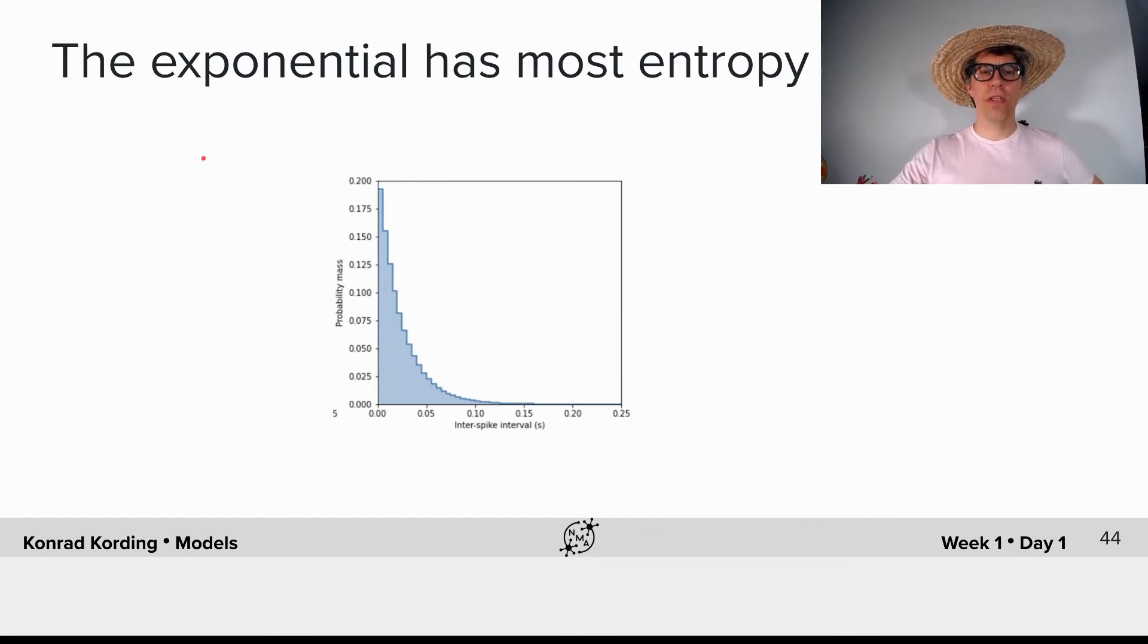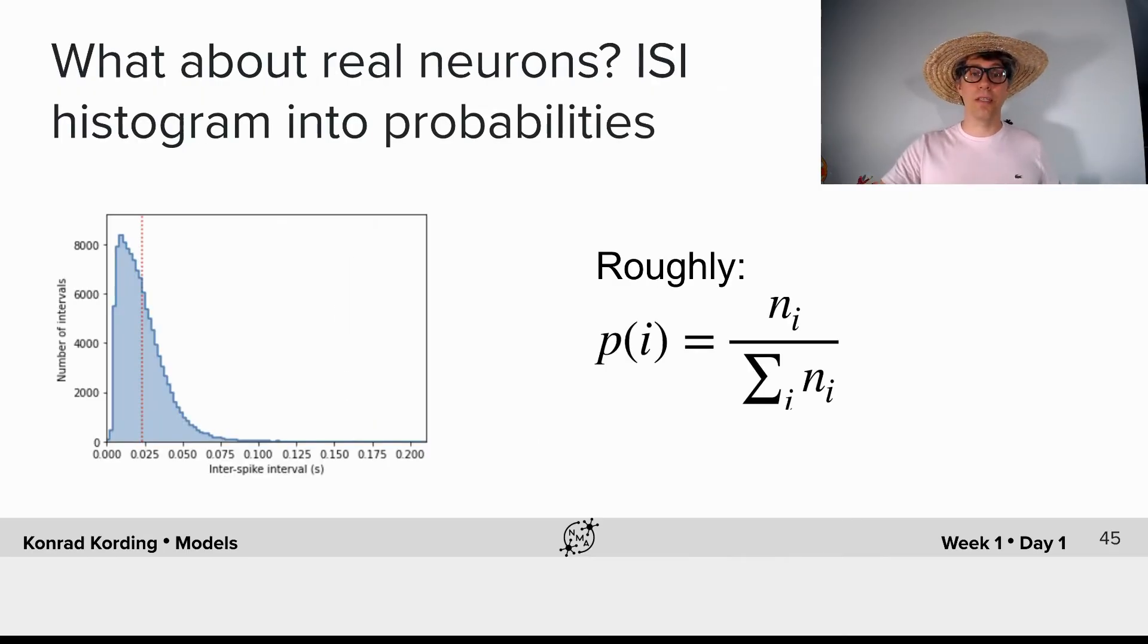So what did we find? We found that among these distributions, the exponential distribution now has the highest entropy. So all of a sudden we can say the fact that it kind of looks exponential now makes sense, because if we take it as a given that there's a constraint about the firing rate that a neuron has long term, what's the best inter-spike interval distribution? We will see that it's the exponential.